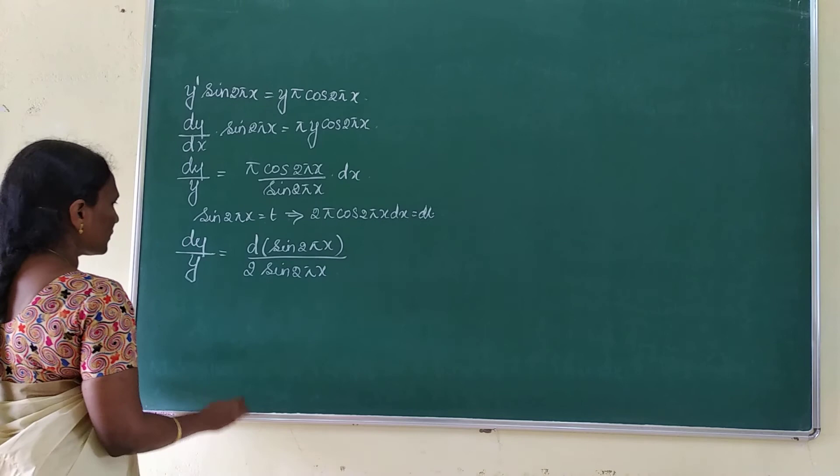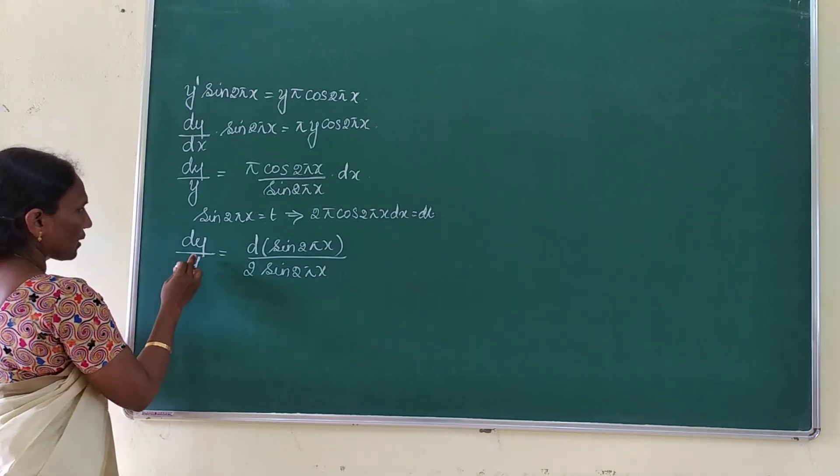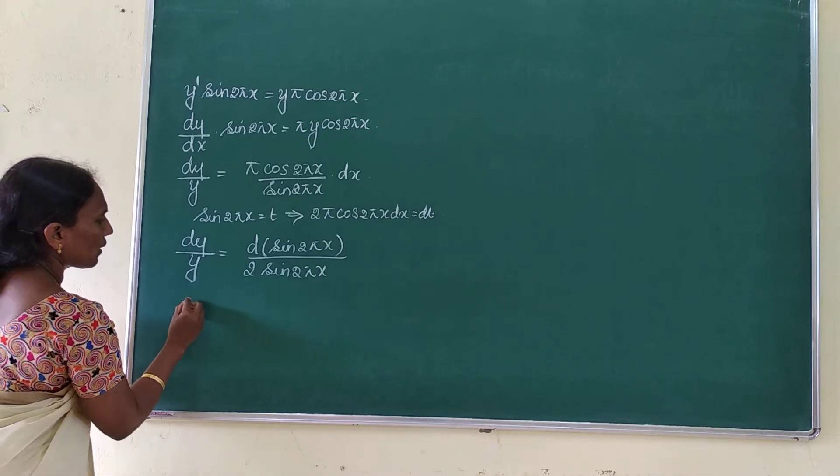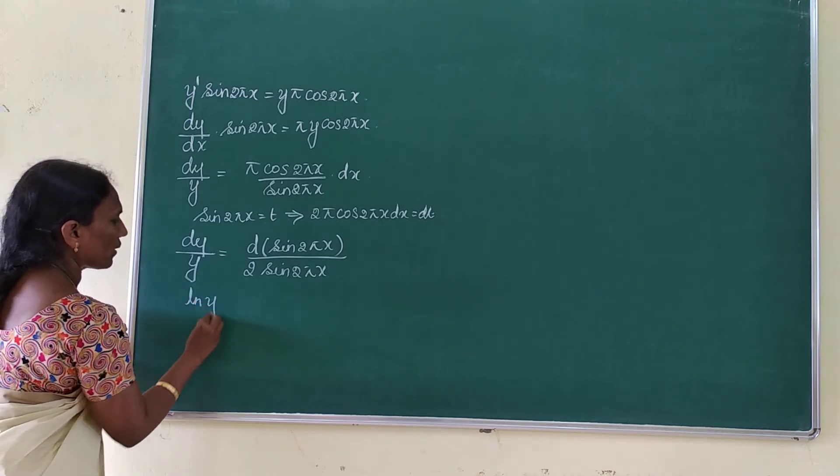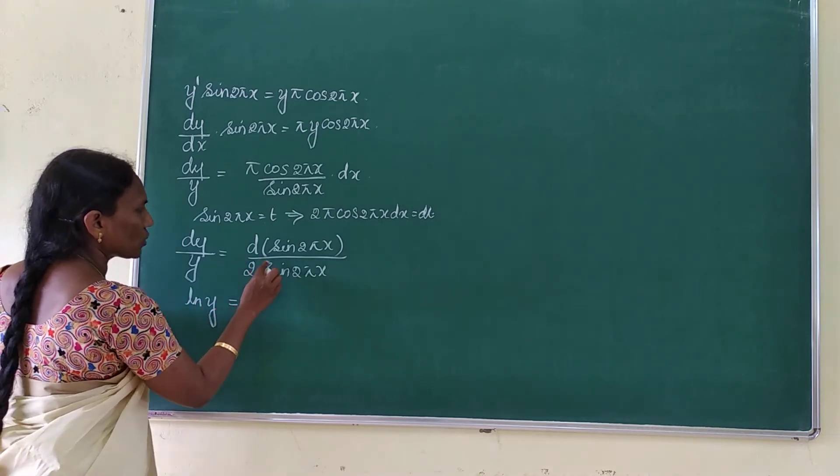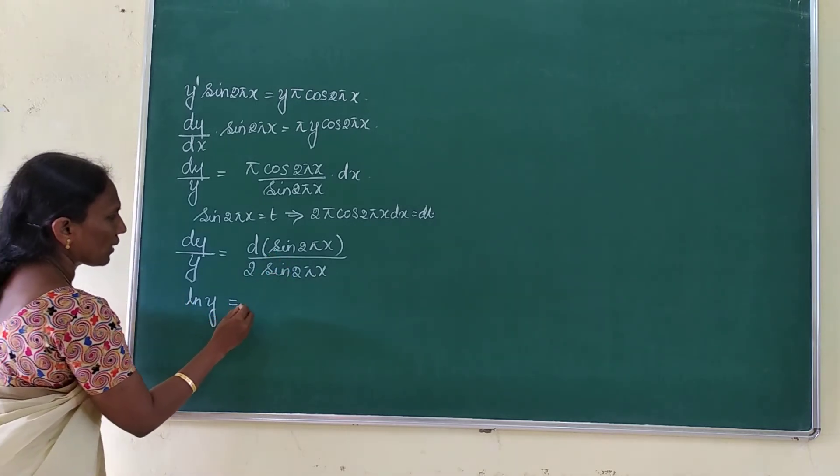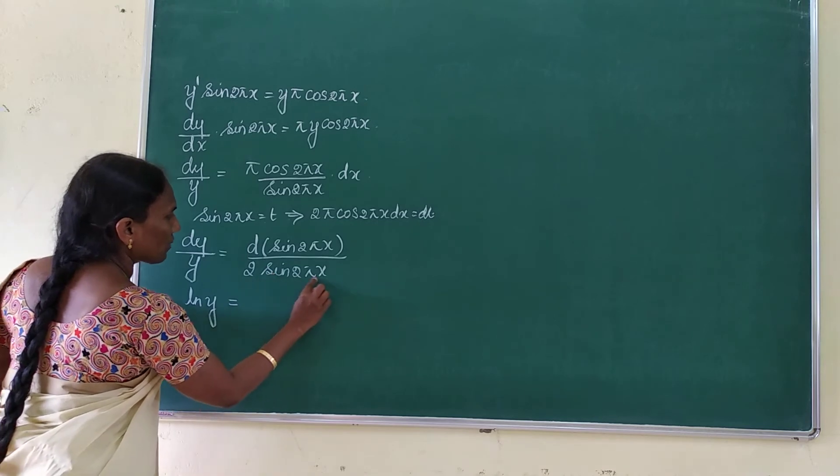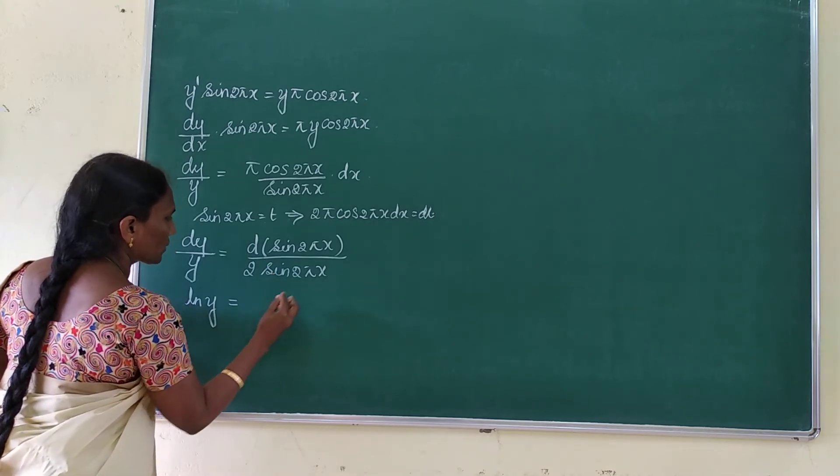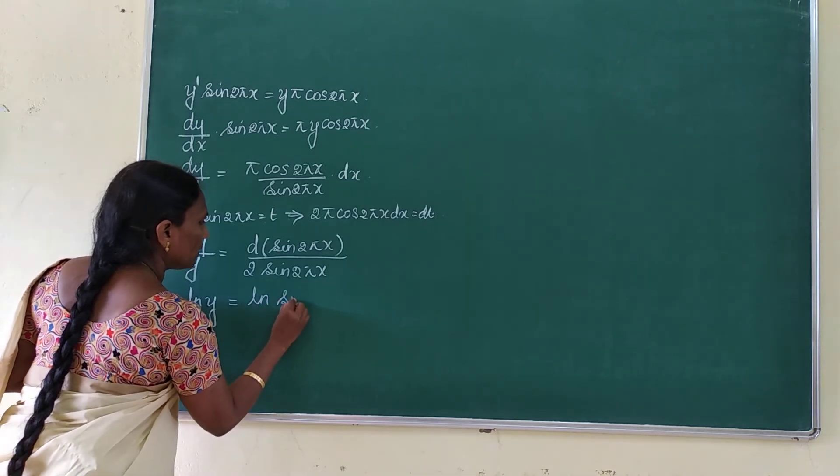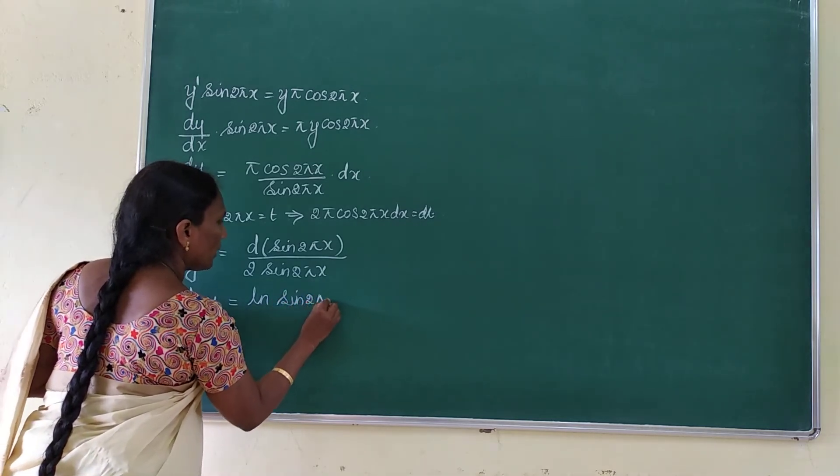Now if you integrate this, then integral of dy by y is nothing but log y. So it is equal to, here also it is like integral of dx by x. Here also it is log x. So here instead of x we have sin 2 by x. So it is log sin 2 by x.